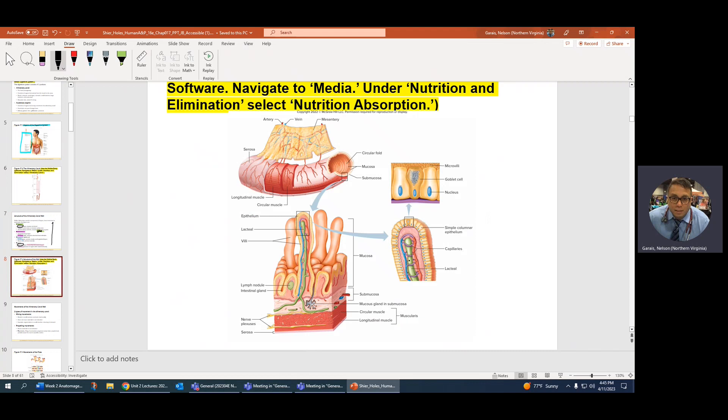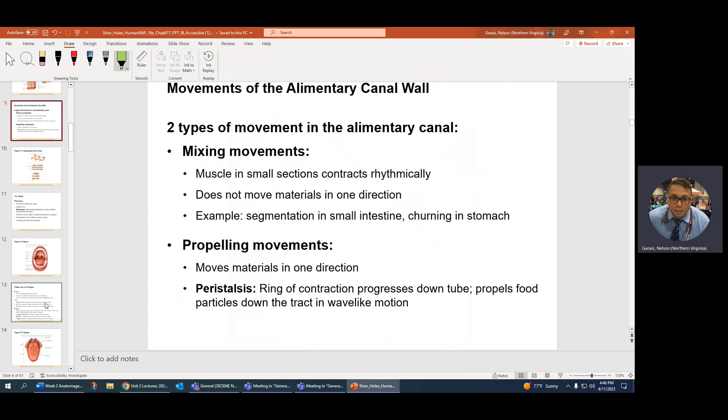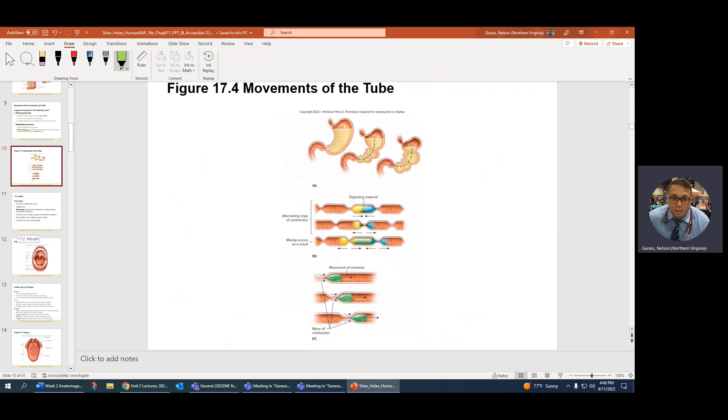So, secrete mucus, highlight this, and then the word goblet cells. Okay. And that's slide number seven. There's a visualization over here. And oh, this is great that I have this green marker going on here. The lacteals. Remember the green? It's part of your immune system. And it's going to take away all that excess fat. Remember the goblet cells? All that green as well. Mixing versus propelling. Remember propelling: peristalsis.